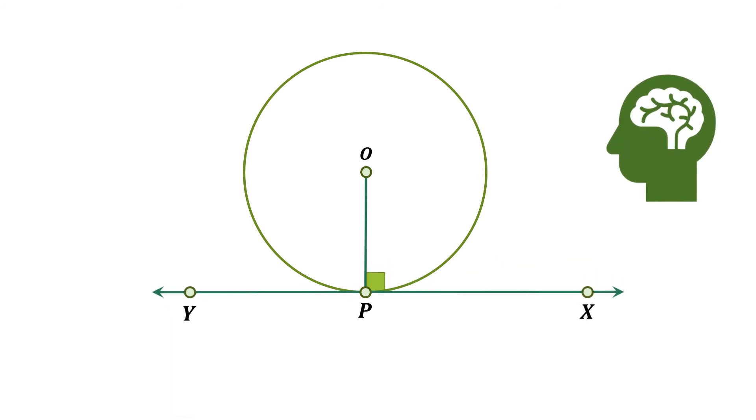Hence, we are left with only one option, that is the line segment OP, which is radius of the circle, must be perpendicular to the line segment xy, if it is a tangent.